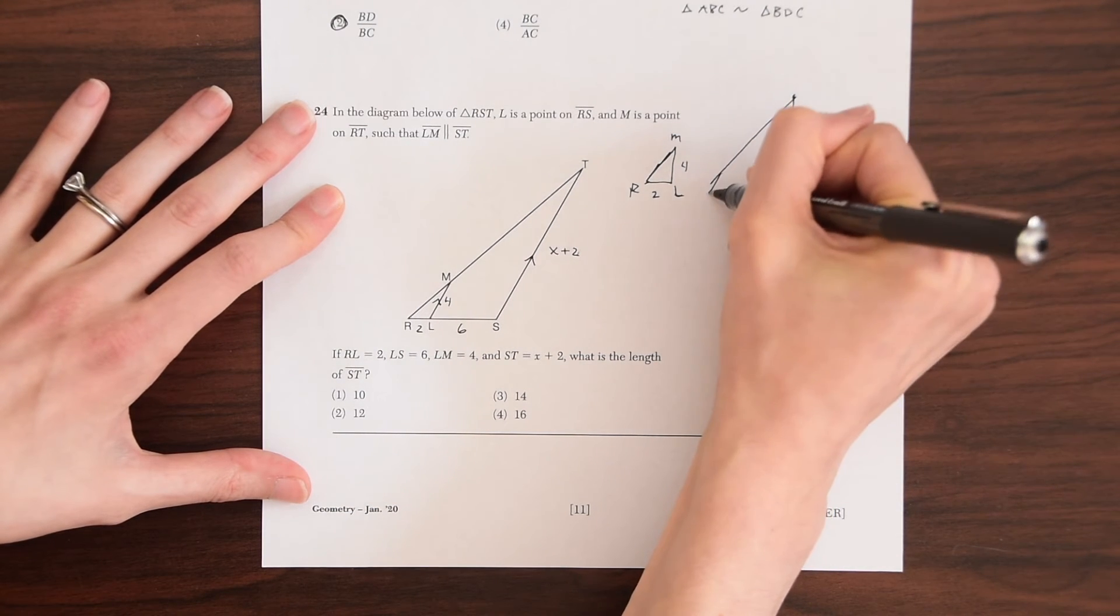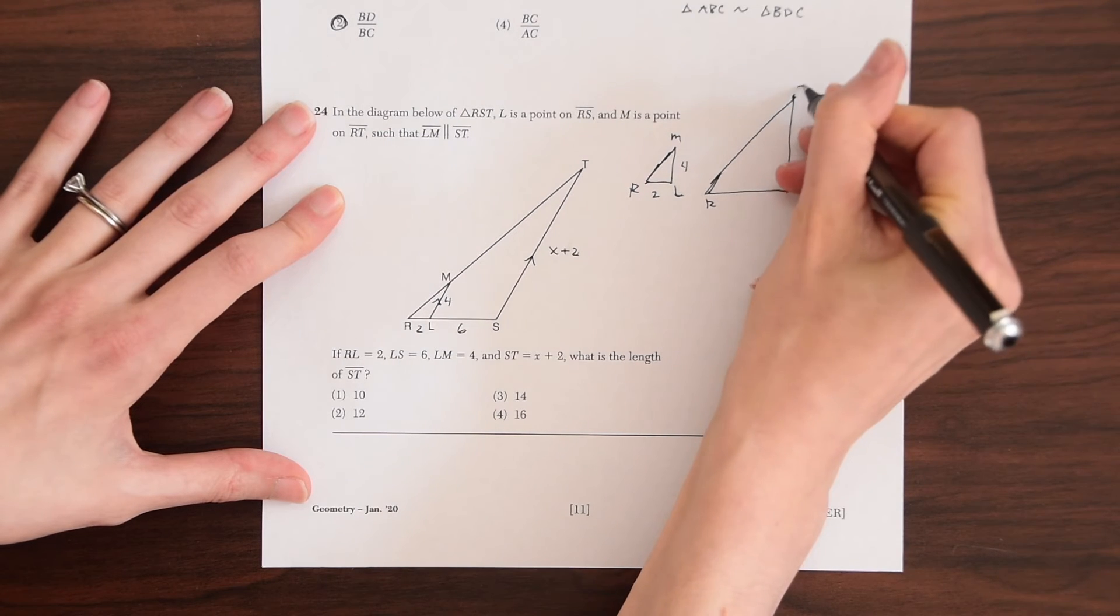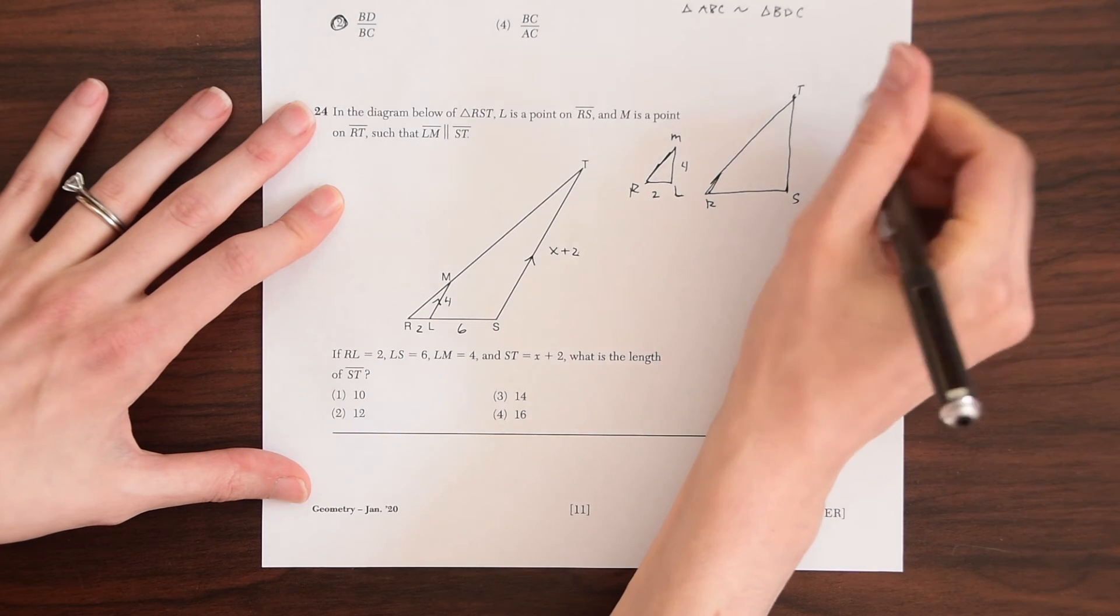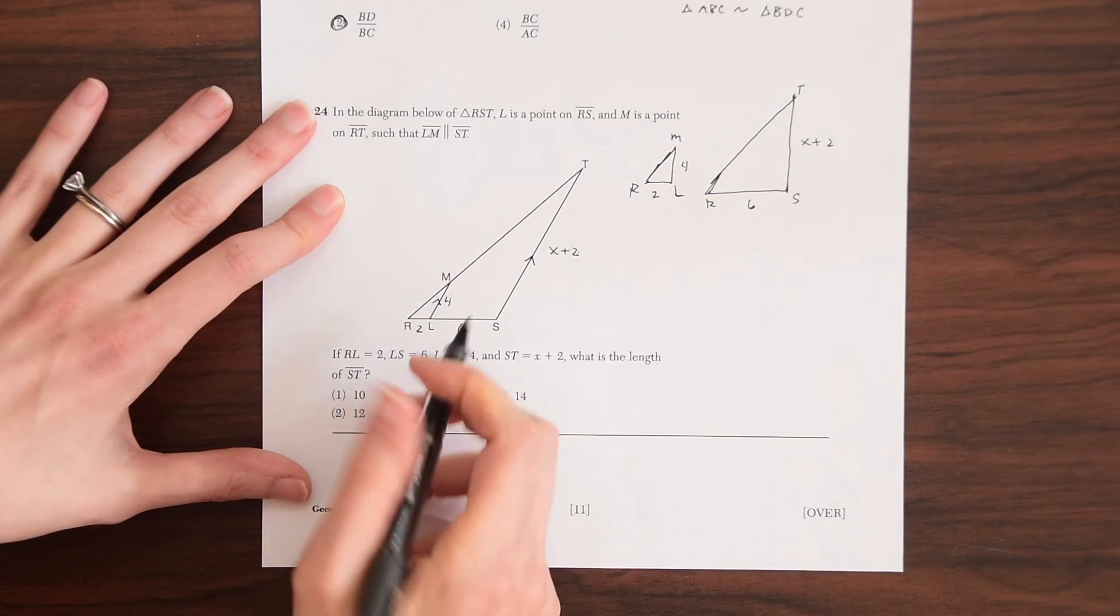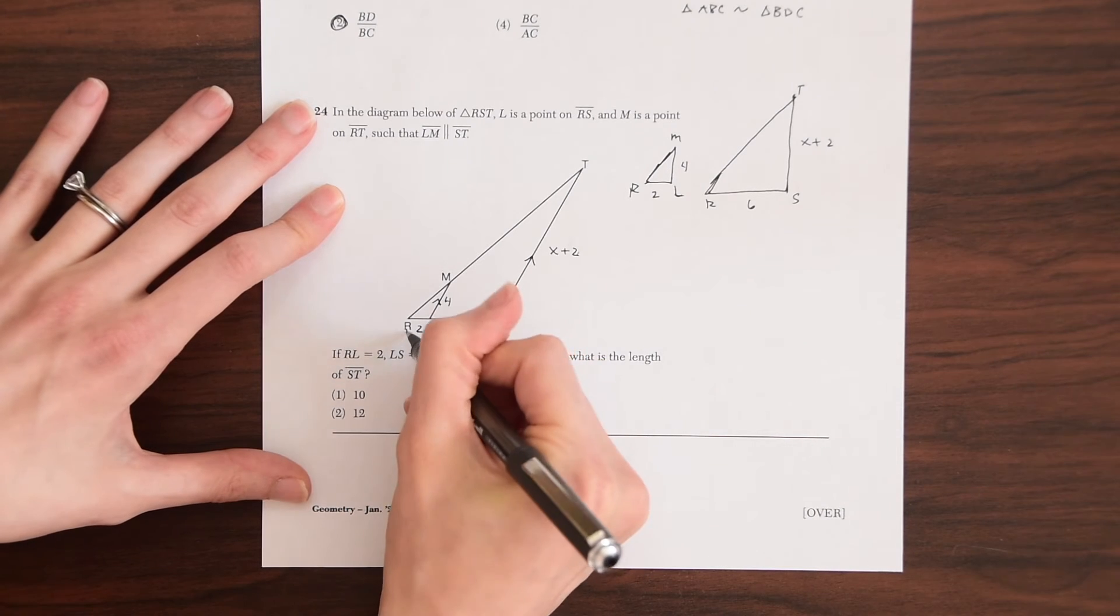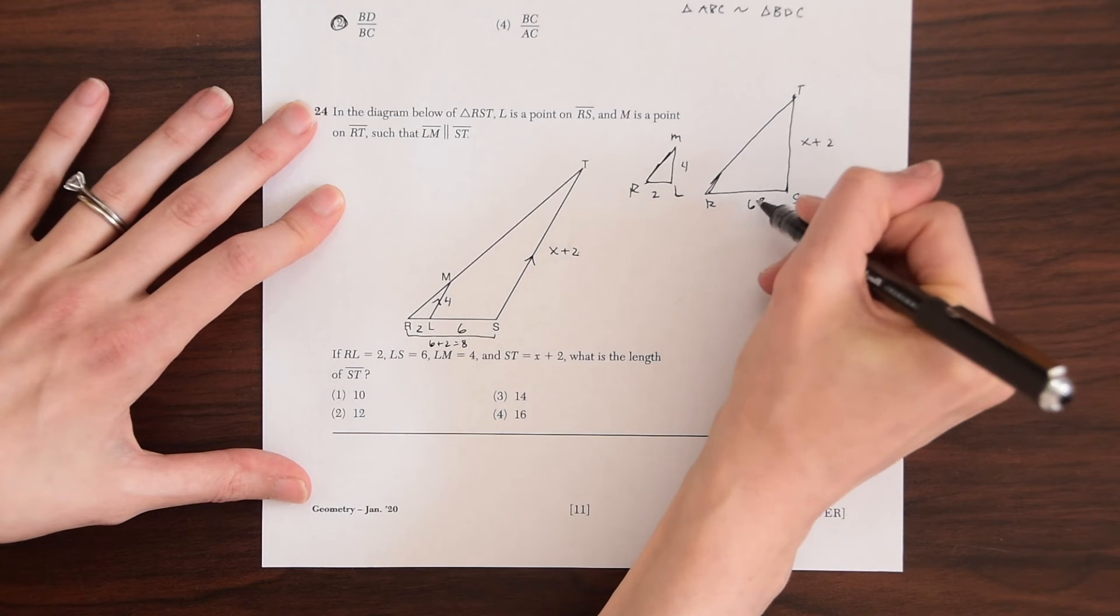And then we have the bigger triangle, which is R, T, S. And here we have X plus two, and here we have this whole length here is six plus two, which is going to give us eight. So this is equal to eight.